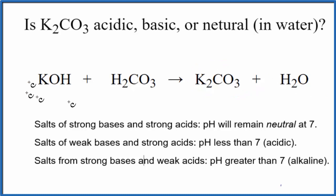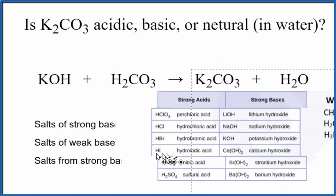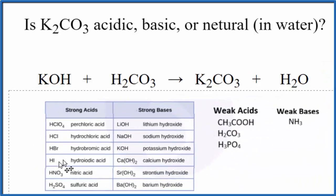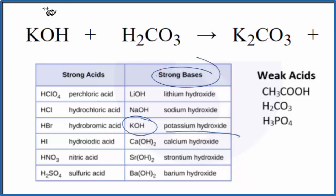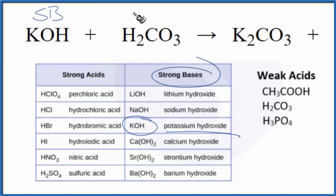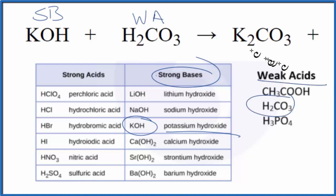Once we know the reaction, we need to figure out the strengths of the substances involved. This table can be really helpful — probably a good one to memorize. We look down the table, here we're looking for KOH — potassium hydroxide is a strong base. For the carbonic acid, we don't see it with the strong acids, so it's going to be a weak acid. Here it is with the weak acids. So we know the strengths of the base and the acid.